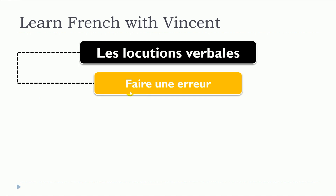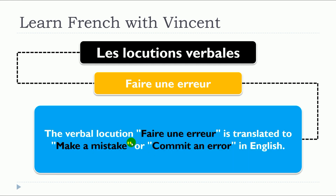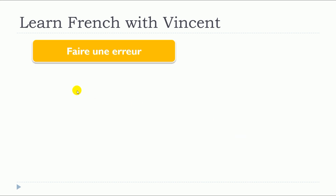This lesson is about faire une erreur. The verbal locution faire une erreur is translated to 'make a mistake' or 'commit an error' in English. We will see some examples with faire une erreur.